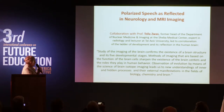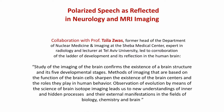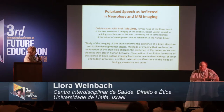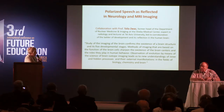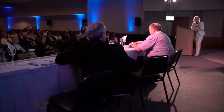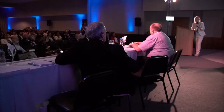That's what she wrote to us: study of the imaging of the brain confirms the existence of the brain structure and its five developmental states. Methods of imaging based on the functioning of brain cells show the existence of brain centers and the roles of the brain in human behavior. Observation of evolution by means of the size of brain thought energy led to new understanding of inner and hidden processes, and their external modification in the field of biology, chemistry, and brain.